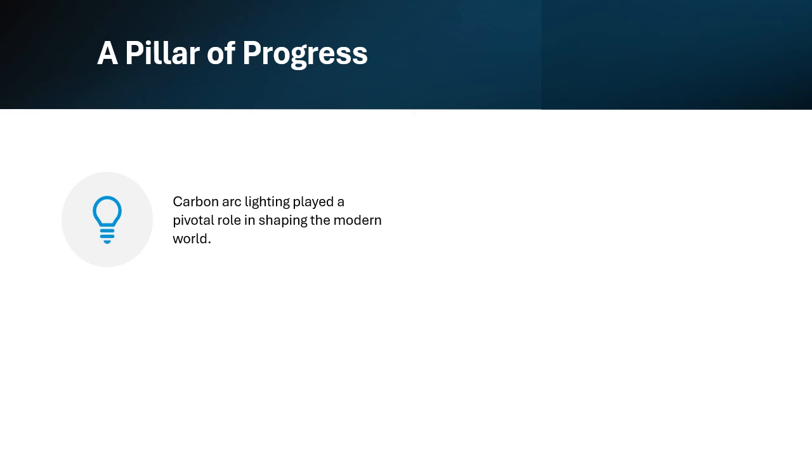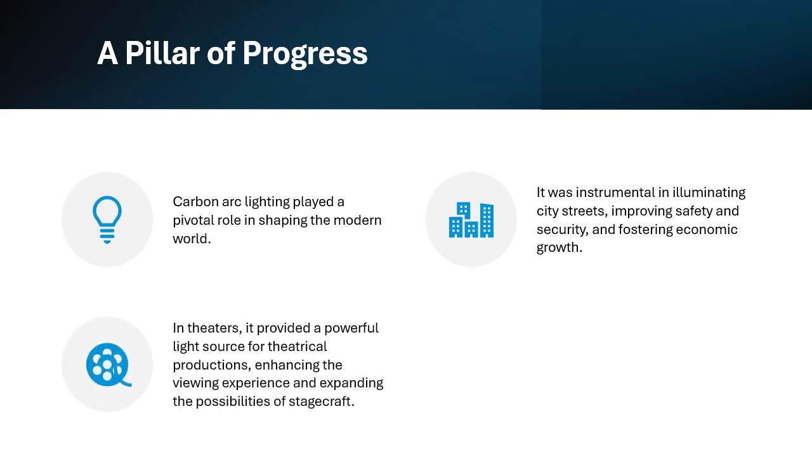A pillar of progress. Carbon arc lighting played a pivotal role in shaping the modern world. It was instrumental in illuminating city streets, improving safety and security, and fostering economic growth. In theaters, it provided a powerful light source for theatrical productions.